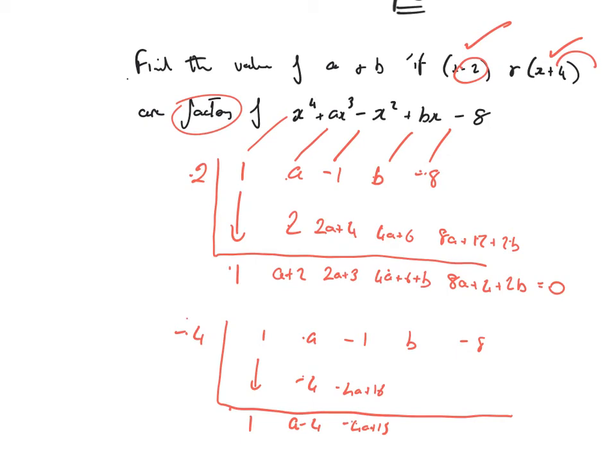Minus 4a times minus 4 is 16a. 15 times minus 4 is minus 60. 16a minus 60 plus b. So, that's 16a plus b minus 60. Multiply that by minus 4, take your time. Minus 64a minus 4b, minus 60 times minus 4 is plus 240.